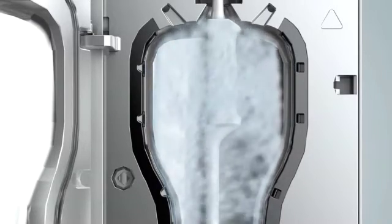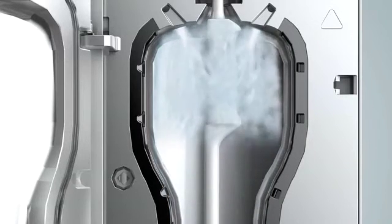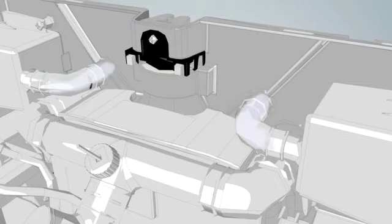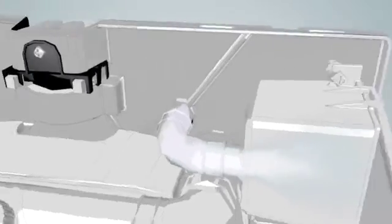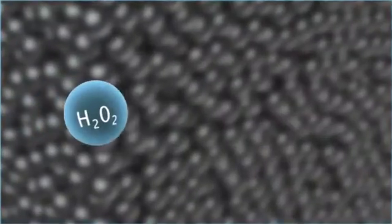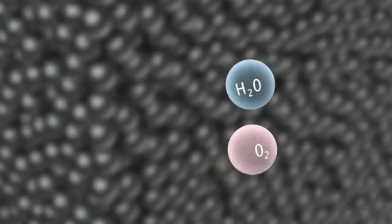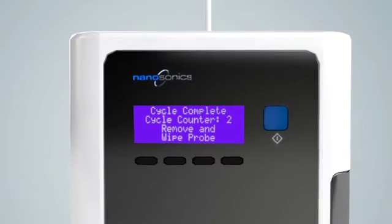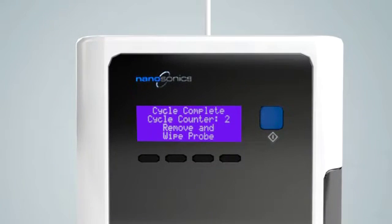After disinfection, residual hydrogen peroxide is blown out of the chamber and passes through destructors, where it is broken down into environmentally friendly water and oxygen. The TROPHON EPR's intelligent control unit determines that the disinfection cycle is successful.